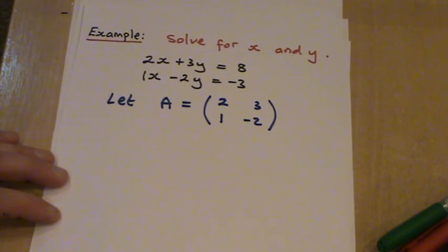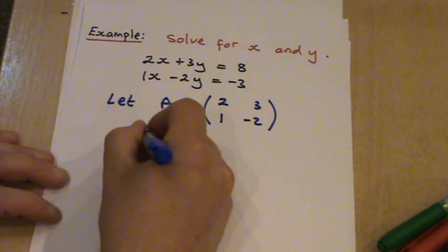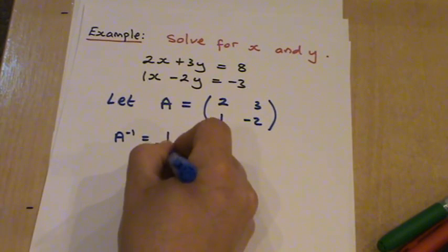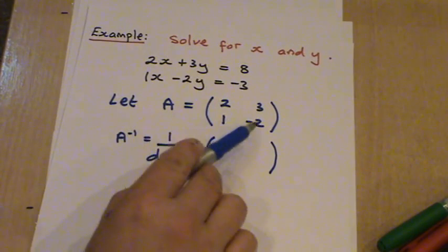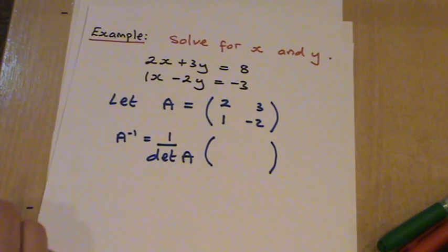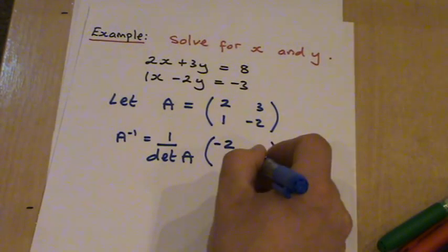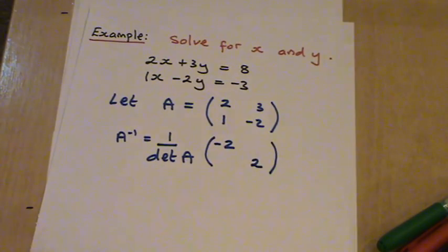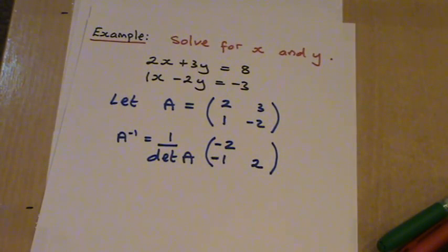So the first thing we have to do is calculate the inverse of this matrix. So A inverse is then going to equal 1 over the determinant of A times, so the two entries on the leading diagonal, we have to swap these. So we're going to get a minus 2 on the top left, and a plus 2 on the bottom right. And the other diagonal, we change the signs. So we're going to get a minus 1 on the bottom left, and a minus 3 on the top right.